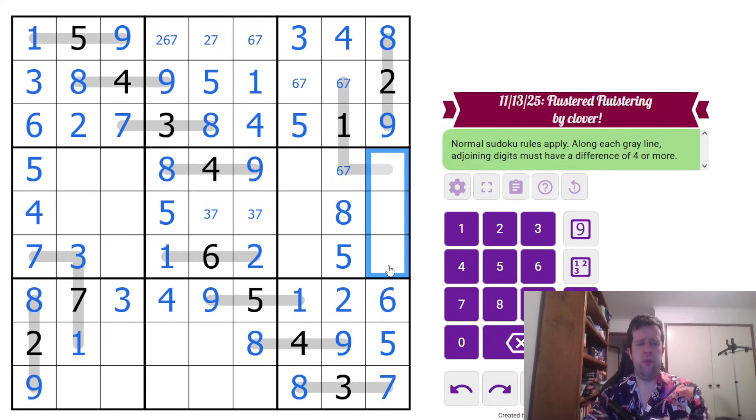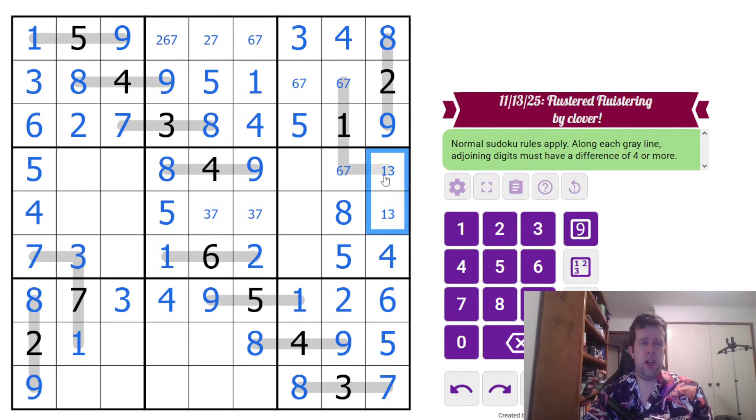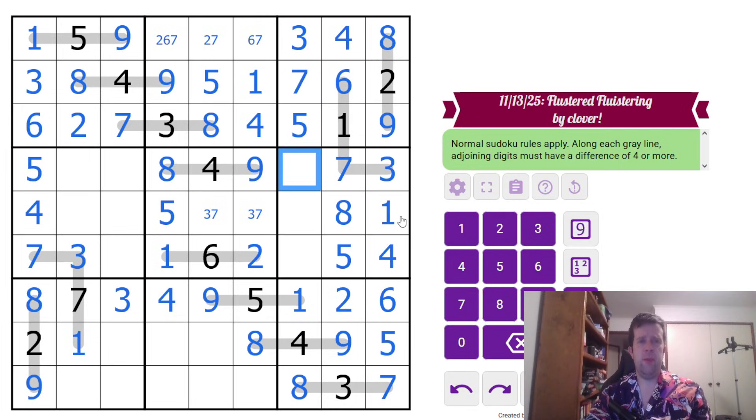One, three, four here. That has to be a four, take the four out of there. Three, seven, there we go. Meaning that a one and a three. Three and six will not give me a difference of four, so that's a seven, that's a six, that's a seven. Wait, well, that's all the lines done, now it's just regular Sudoku.